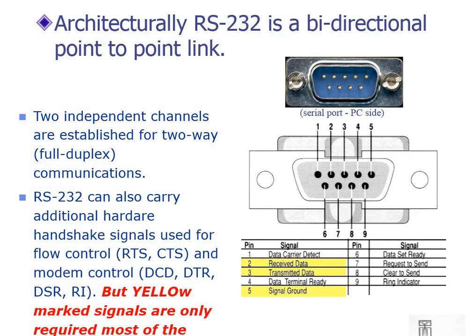Architecturally, RS-232 is a bi-directional point-to-point link. You can see the RS-232 connector on the PC side with 9 wires. Among the pins, the yellow-marked ones — pin number 2, 3, and 5 — are usually the only ones required for simple communication between the device and the PC. The others are called hardware handshaking signals, required in advanced RS-232 applications not discussed in this tutorial.